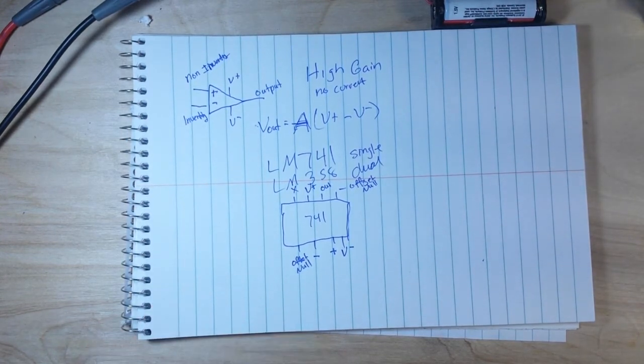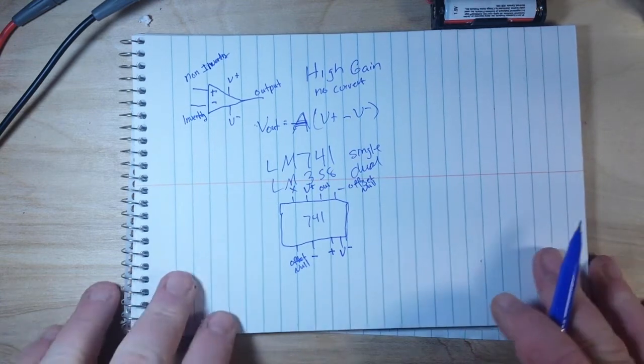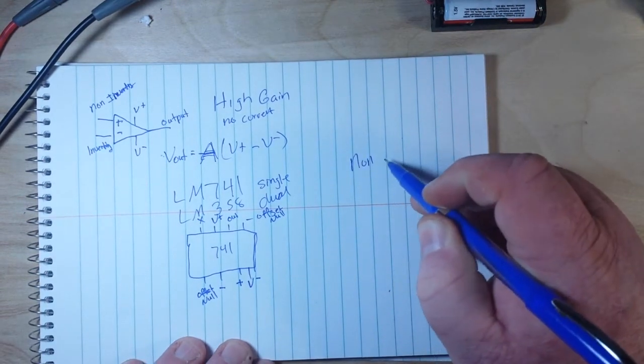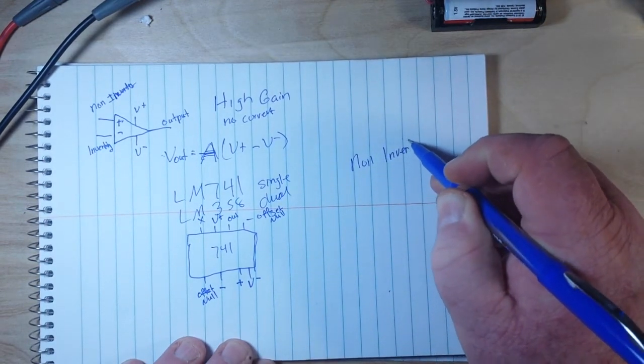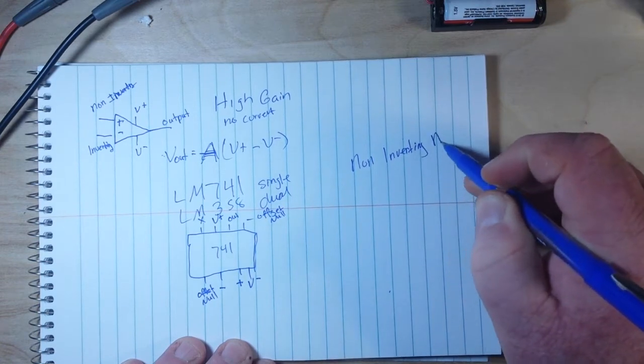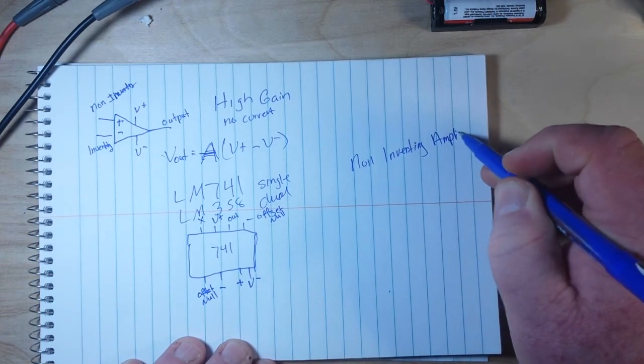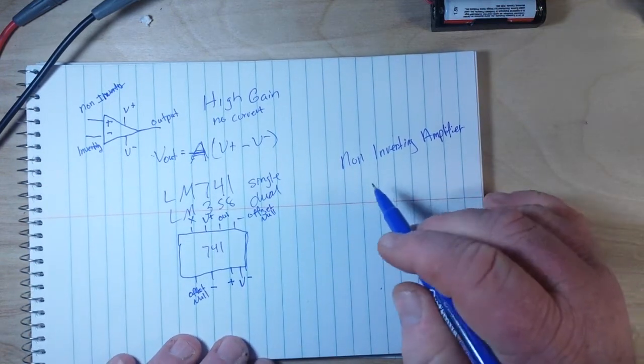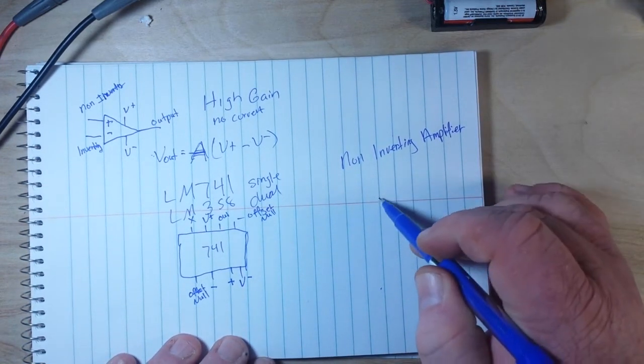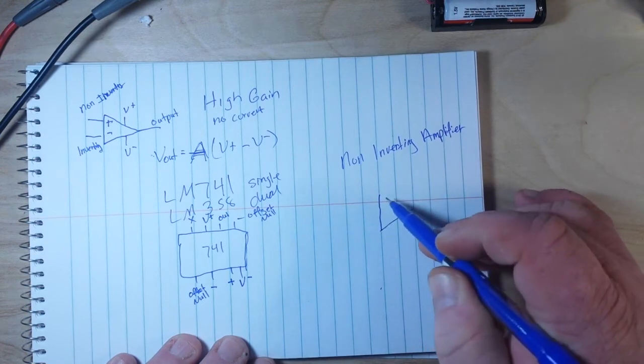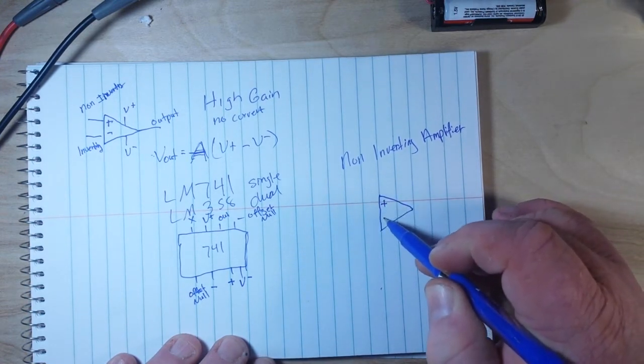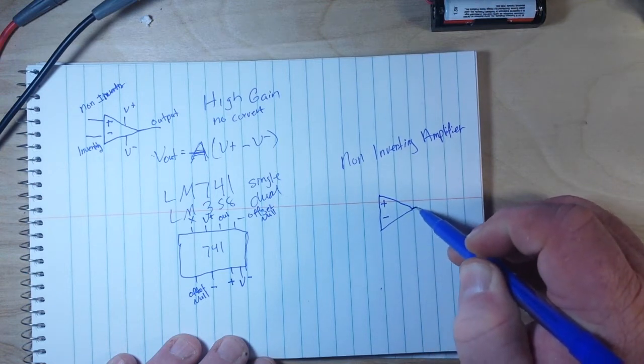All right, like the saying goes, I told you that so I can tell you this. What we're going to make today is a non-inverting amplifier. And it goes a little something like this. Here's our op amp: non-inverting, inverting, output.